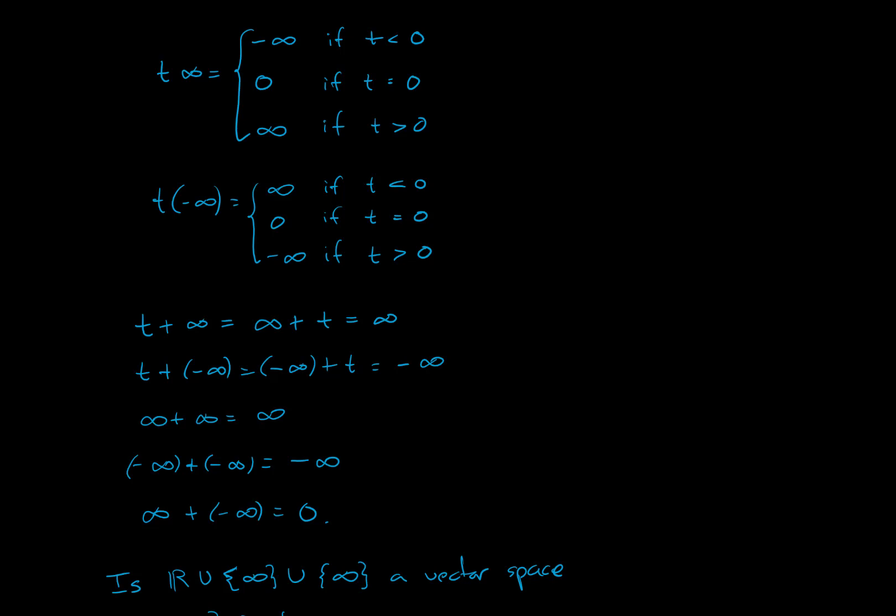And similarly, for t times −∞, also, we have some addition rules: t + ∞ = ∞, ∞ + ∞ = ∞ and ∞ + (−∞) = 0.